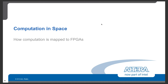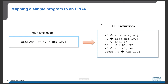Now we show how computation is mapped to FPGA using an example. Here we have a high-level code performing accumulation operations. Specifically, we want to read data from memory at location 101, multiply it with 42, and then add that value on top of the original value at location 100, storing the accumulated result into memory location 100.